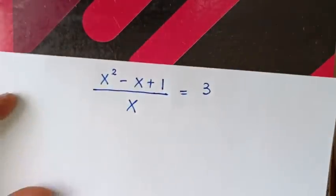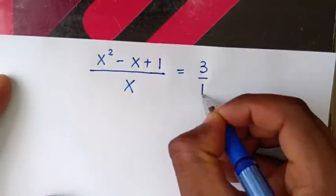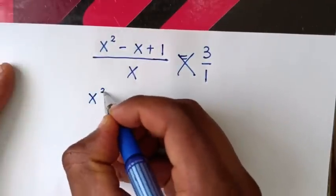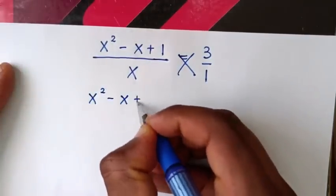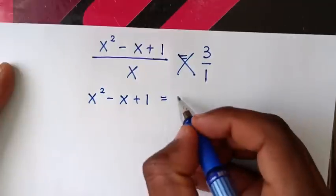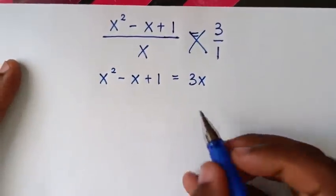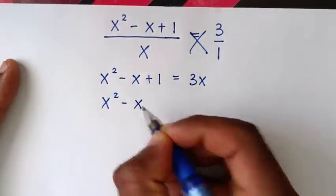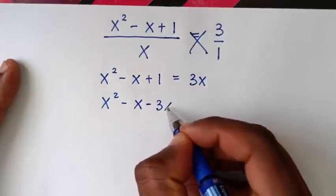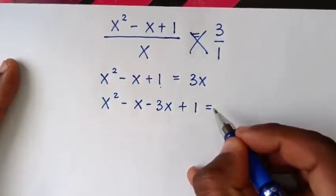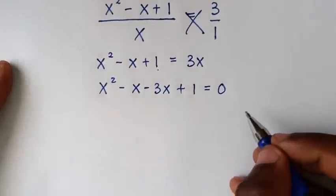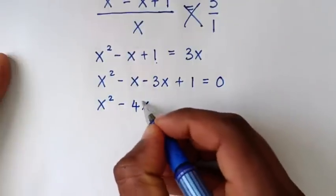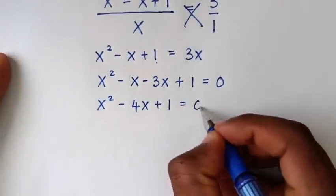We cross multiply (treating 3 as 3/1): x² − x + 1 equals 3x. Rearranging, we bring the 3x to the left: x² − x − 3x + 1 equals 0, which simplifies to x² − 4x + 1 equals 0.